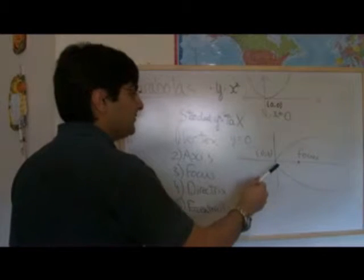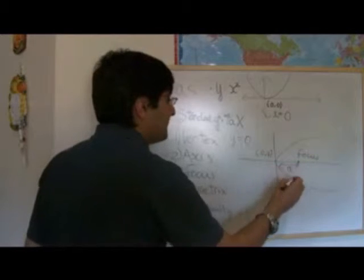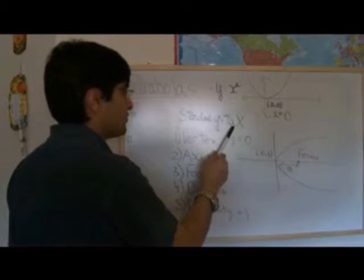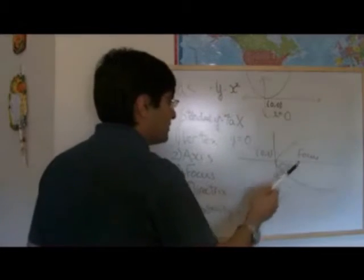The distance between the vertex and the focus, this distance here, is a. This constant that I was talking about in the standard equation refers to the distance between the vertex and the focus.